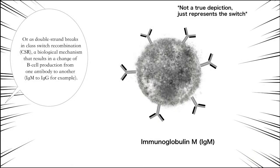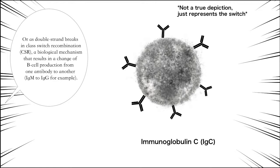Whereas double-strand breaks in class-switch recombination, CSR, a biological mechanism that results in a change of B cell production from one antibody to another, IgM to IgG, for example.